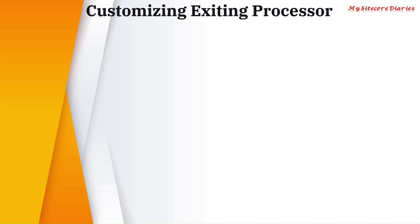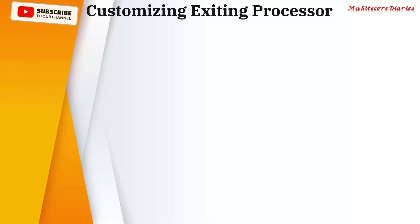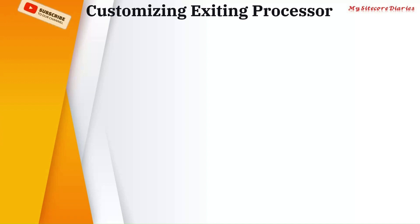Let's see how to customize the existing processes, existing processor. So most of the time, if you have to write any pipeline, you will be mostly overriding the existing processor or processes. How can you do that?